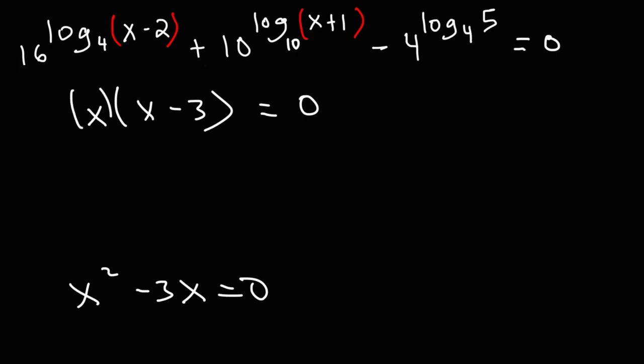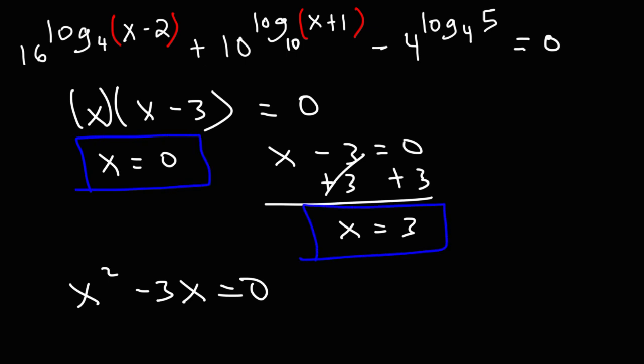And then we could set each factor equal to 0. So adding 3 to both sides here will give us this solution. So we have two possible answers: x can equal 0 or 3. But now, do both solutions work? Are both of them acceptable? Well, we can't plug in 0 into this expression because we'll have log negative 2. And you can't have a negative number inside of a log. So we can get rid of that solution.